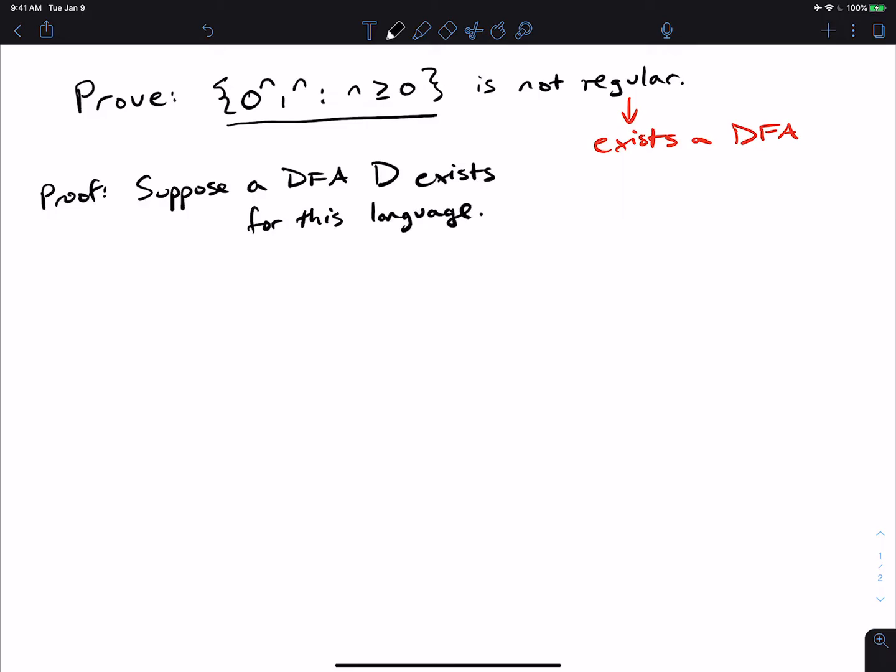So we're just supposing that a DFA exists. And let's suppose that D has n states. So because the DFA exists, it must have some finite number of states. And let's let that number be n. We don't know what the number of states is. Let's just say that it has n states.